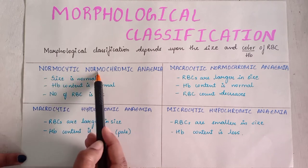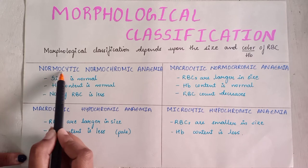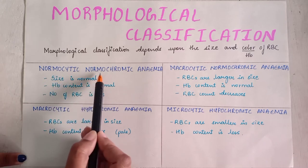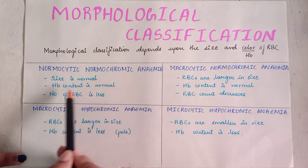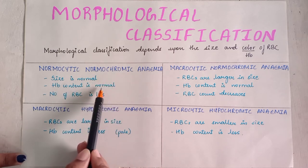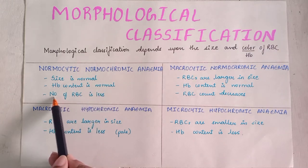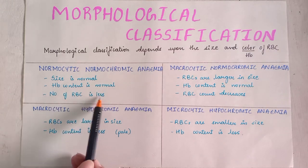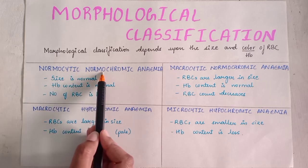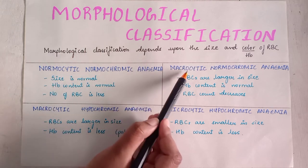First: normocytic normochromic anemia. Normocytic means the size is normal, whereas normochromic means normal color, that is hemoglobin content is normal. But as it is anemia, the number of red blood cells is less.